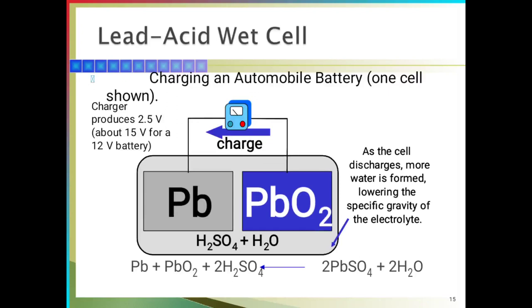This is the charging of batteries. The charger produces 2.5 volts per cell — that is 15 volts for a 12-volt battery. As the cell discharges, more water is formed, lowering the specific gravity of the electrolyte. During charging, lead sulfate and water react to form lead, lead oxide, and sulfuric acid. Thank you for watching this video. See the next section. Thank you.